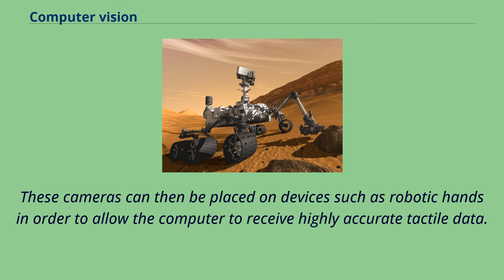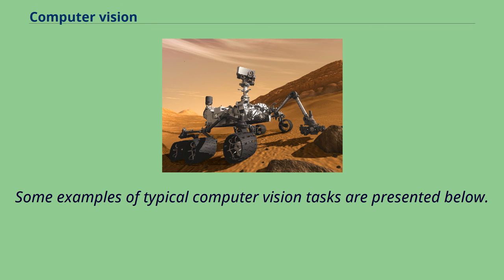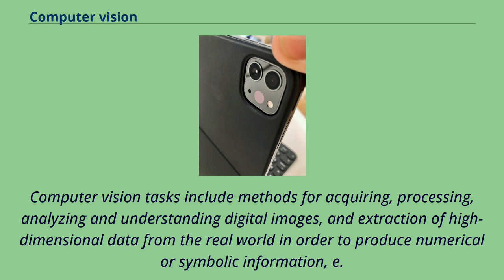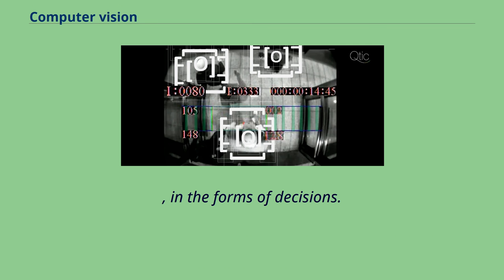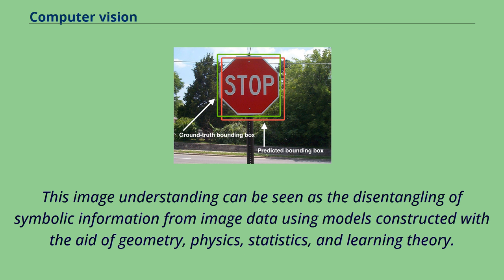Each of the application areas described above employs a range of computer vision tasks — well-defined measurement or processing problems which can be solved using a variety of methods. Computer vision tasks include methods for acquiring, processing, analyzing and understanding digital images, and extraction of high-dimensional data from the real world to produce numerical or symbolic information, e.g., in the forms of decisions. This image understanding can be seen as the disentangling of symbolic information from image data using models constructed with the aid of geometry, physics, statistics, and learning theory.